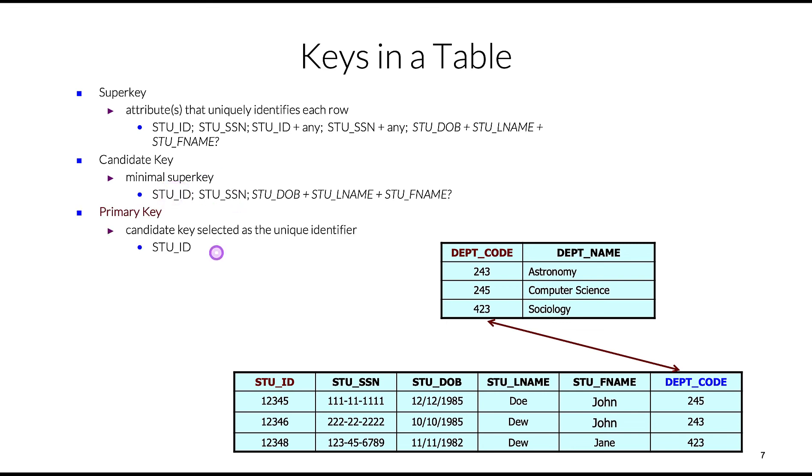In the second table, department, we already have our primary key in this attribute. It's also shown in the second table, the student table. So when the primary key from one table is used in another table, it becomes a foreign key. In this case, department_code is a foreign key in relationship to the department table.